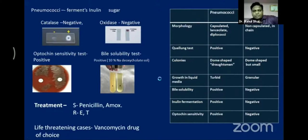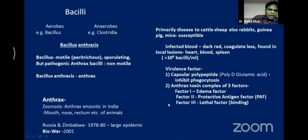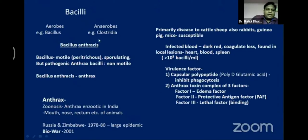Now we turn to bacilli. There are two types: aerobic and anaerobic. Note: 'bacillus' is the name of the organism genus, while 'bacilli' refers to the rod shape of bacteria. An anaerobic example is Clostridia. First we'll look at Bacillus anthracis, also called anthrax bacilli. All bacilli are motile except the pathogenic anthrax bacilli, which is non-motile.